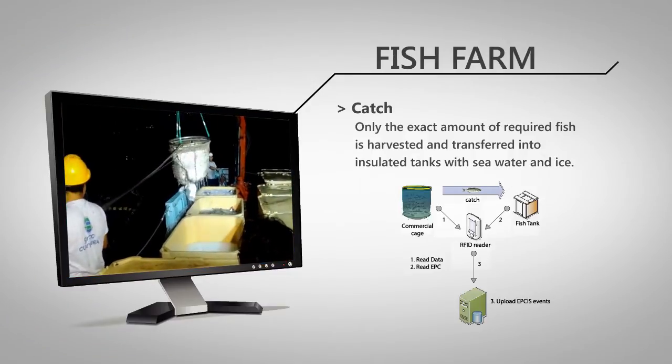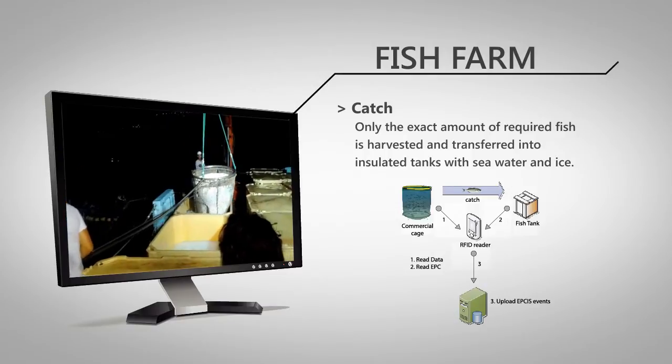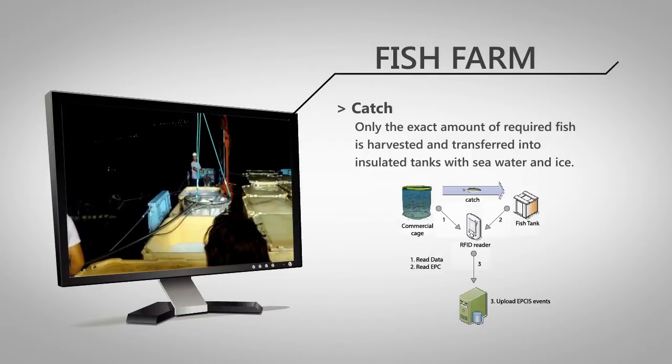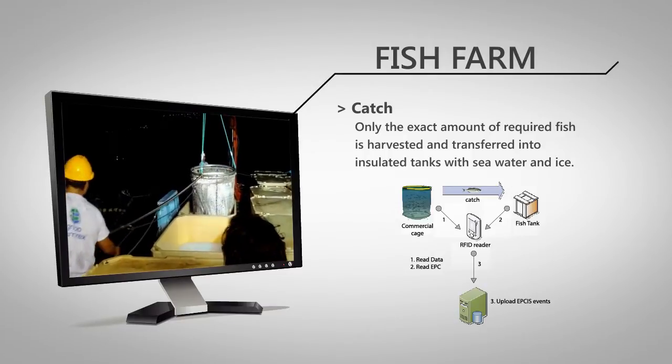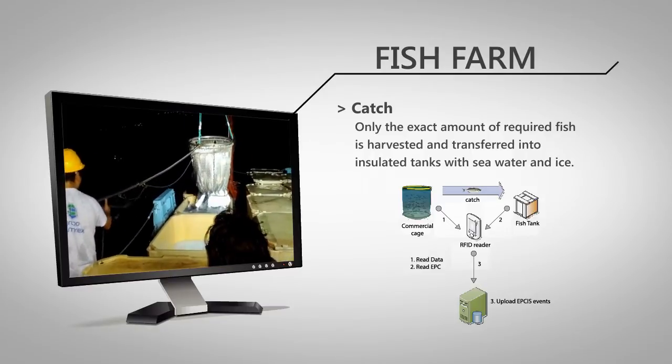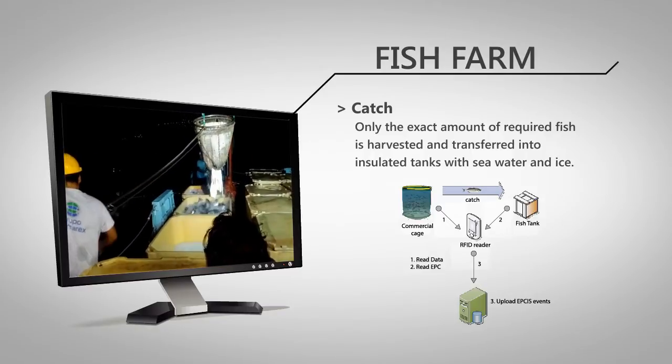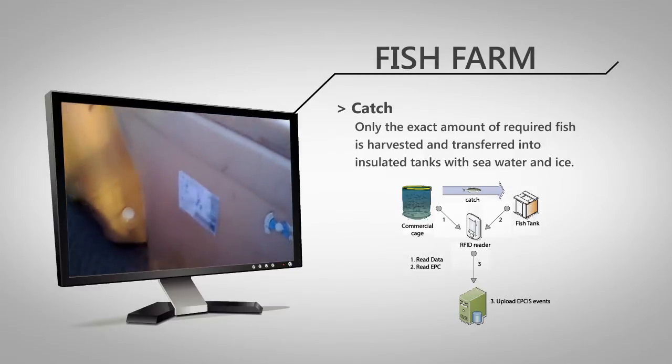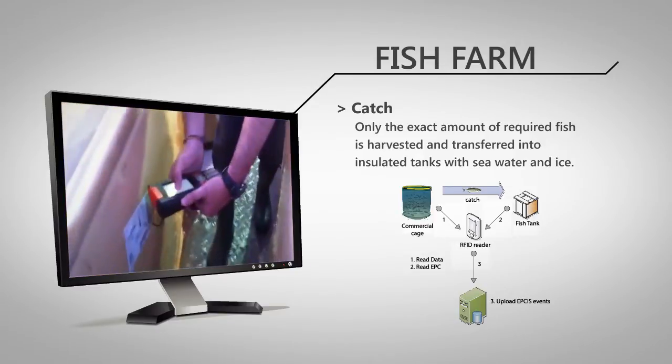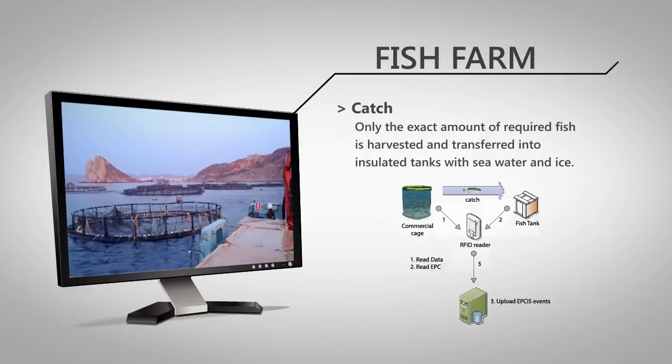After harvest, fish is transferred into insulated tanks with sea water and ice until arrival at the processing plant. The handheld reader is used to identify the cage and to insert information of the catching operation. It is also used to identify the tanks that participate in the catching operation in order to trace them during logistics processes.